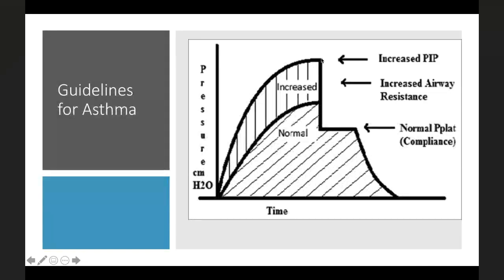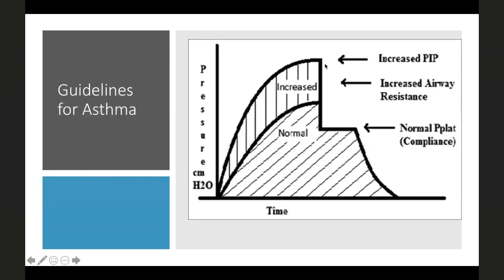The difference between peak inspiratory pressure and plateau pressure is accounted for by increased airway resistance — that pressure drop is lost overcoming resistance through constricted airways. As long as plateau pressure is within limits (less than 30 cmH2O), barotrauma risk is reduced. Monitor for pneumothorax in patients with emphysematous changes. Accept higher peak pressures until bronchodilators and other treatments control the primary trigger.